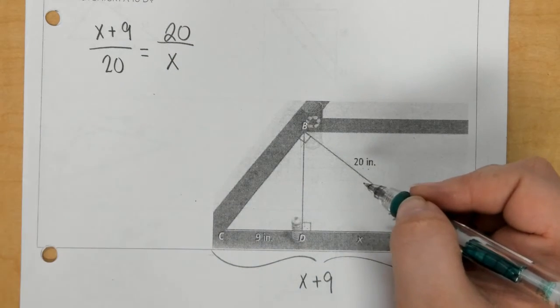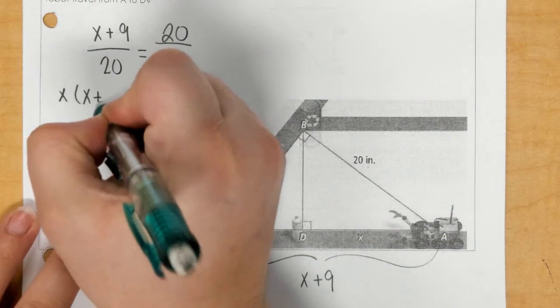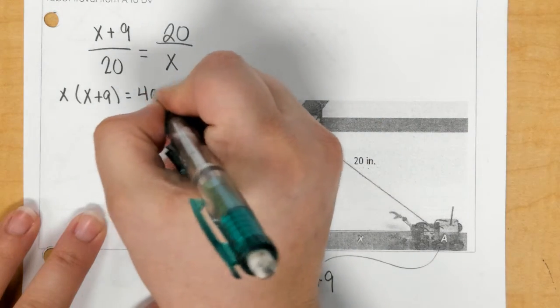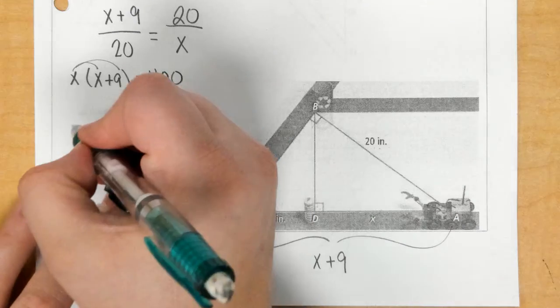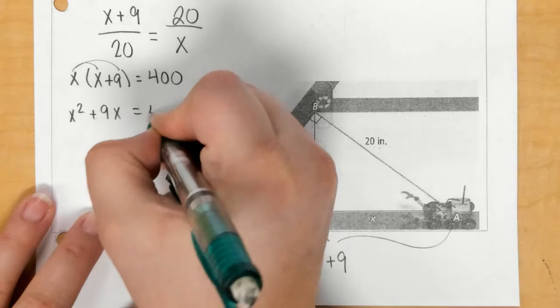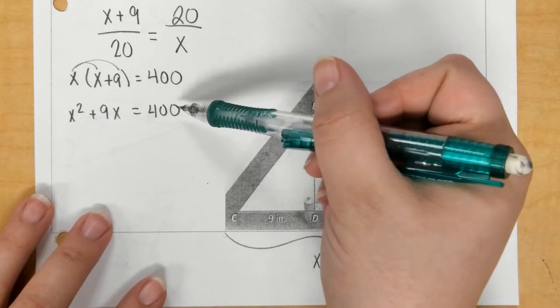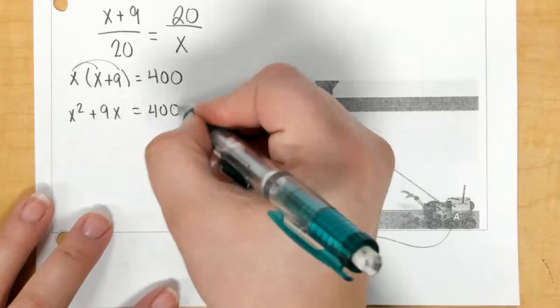And then, we have to cross multiply. So, X times X plus 9 equals 20 times 20, which is 400. So, you would need to distribute your X and get X squared plus 9X equals 400. Because this is what we call a quadratic, we have to get the 400 to the other side and make this equal to 0.